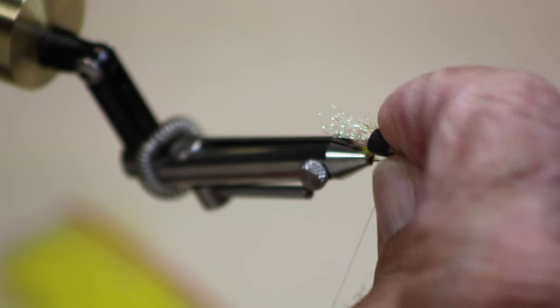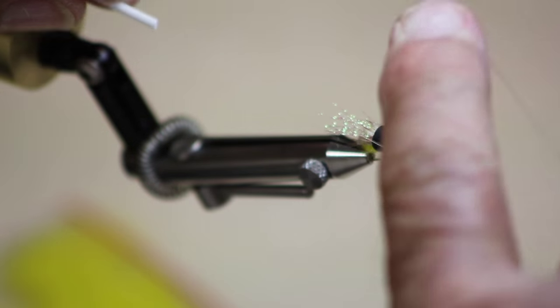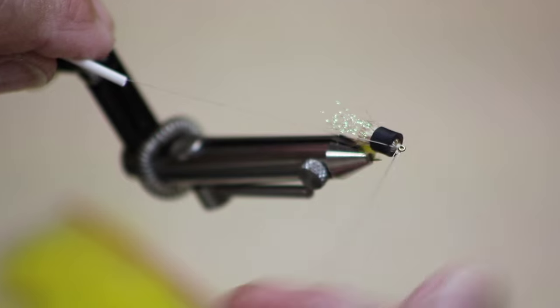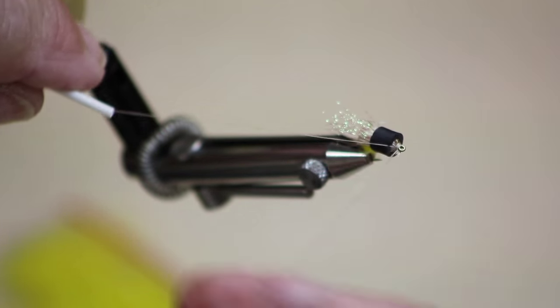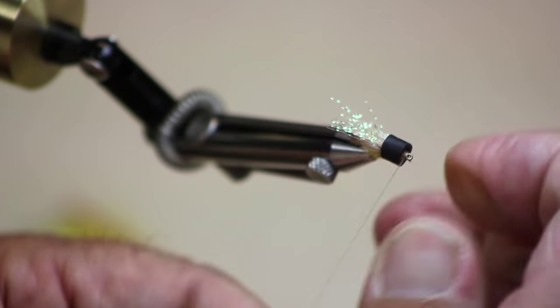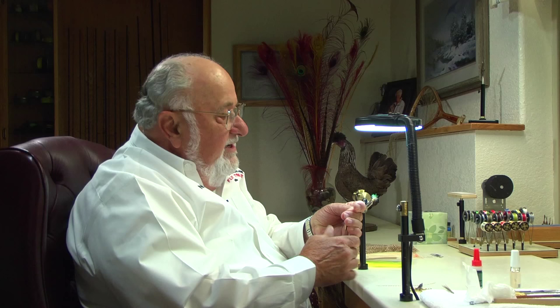And that gives you an opportunity to come in and do a nice decent whip finish like I'm doing here. Pull that up nice and tight. Bring your hackle guard back down. You just leave that right on the bobbin tube like so. And flip off our thread.